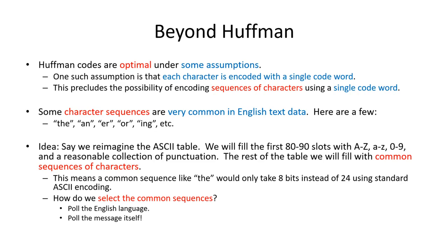One of the assumptions made to prove that Huffman is optimal is that each character will be assigned a codeword. Our next model will also do that, except we're also going to assign codewords to sequences of characters. This is prohibited in the proof that shows Huffman codes are optimal. By violating that assumption, we step outside the scope of that proof, meaning that proof does not apply to this method.